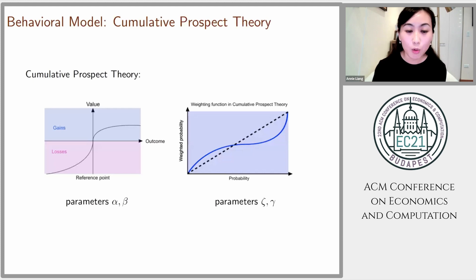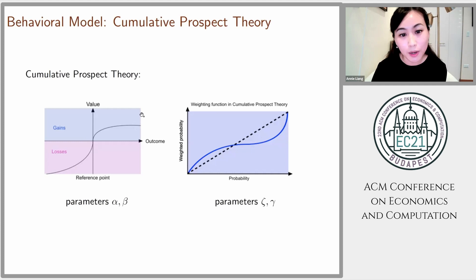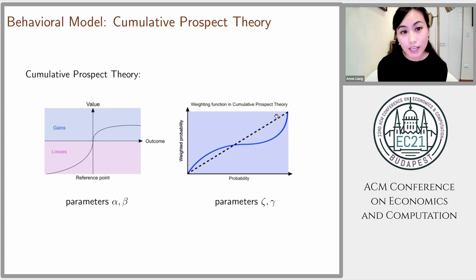There are many different models we could use for predicting that certainty equivalent. One quite famous one is the cumulative prospect theory model, CPT. There are two parts to it: one is a value function over money, and the second is a probability distortion function — the idea being that people don't correctly assess probabilities. One popular functional form associates two free parameters with this part and two free parameters with this part.